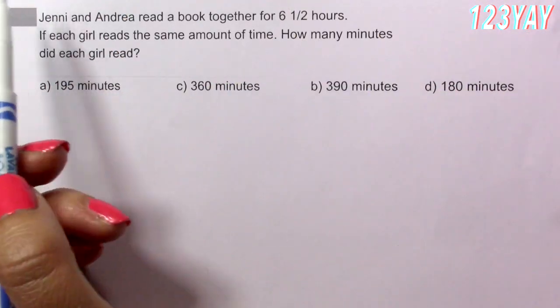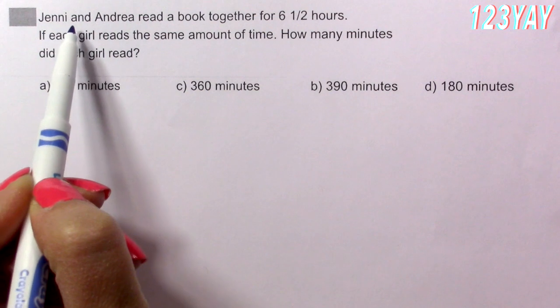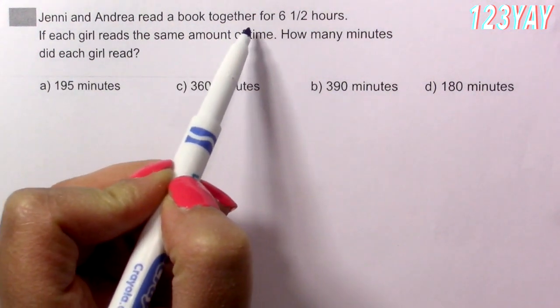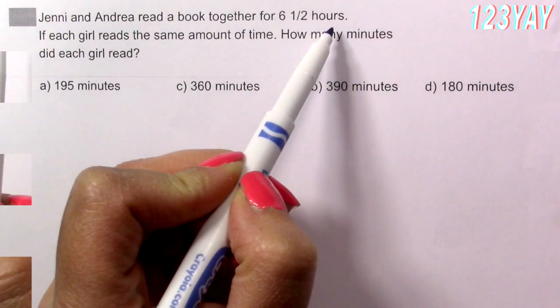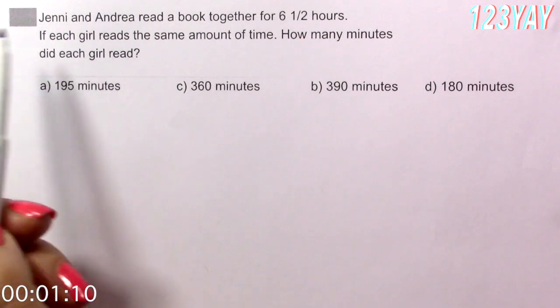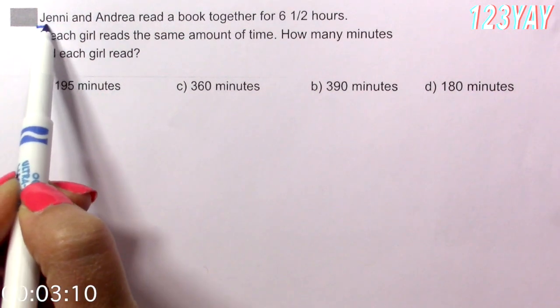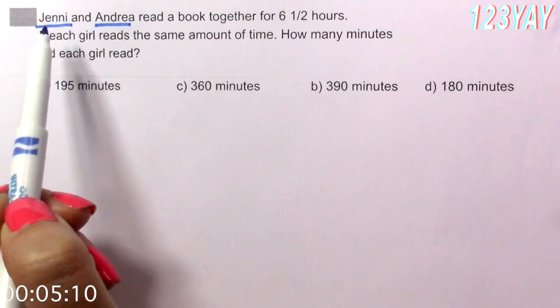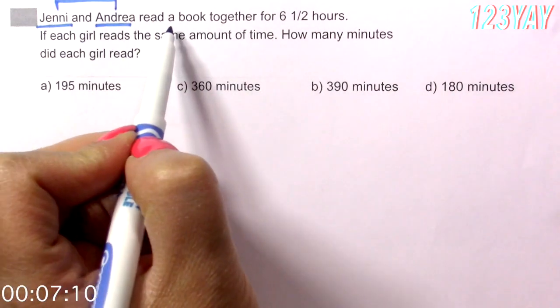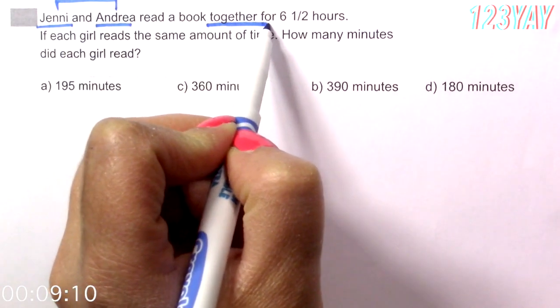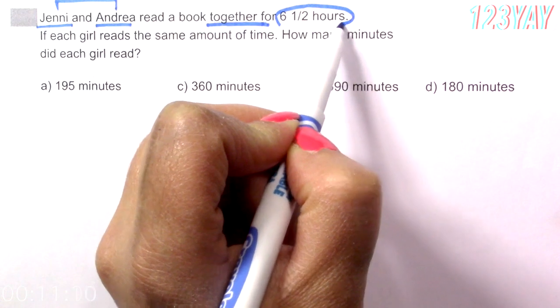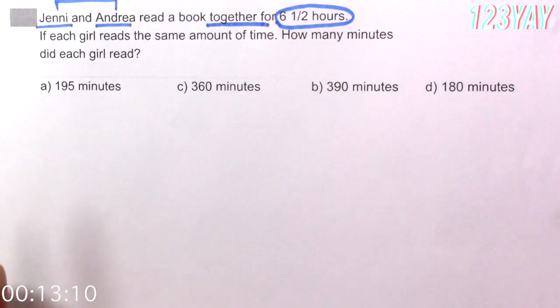Okay guys, so let's read this together. Jenny and Andrea read a book together for six and a half hours. Can you see the keywords on this sentence? I think that Jenny and Andrea are two girls and they read a book together for six and a half hours. That is important.